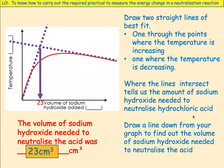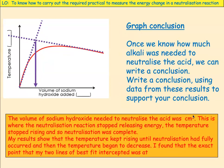You need to be able to describe how you do this. It's very unusual that you have to draw two lines of best fit on any graph, but this one does require it. Once we know how much alkali was needed, we can write a conclusion: the volume of sodium hydroxide needed to neutralise the acid was 23 cm³. This is where the neutralisation reaction stopped releasing energy, the temperature stopped rising, and all the acid had reacted with the alkali. My results show that the temperature kept rising until neutralisation was complete, then began to decrease, and the exact point where my two lines of best fit intercepted was at 23 cm³.